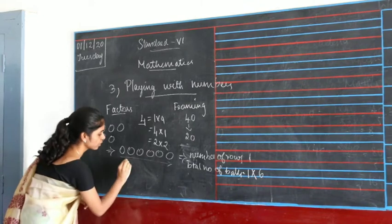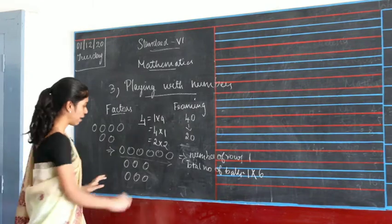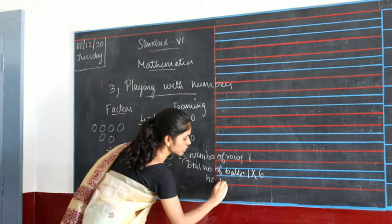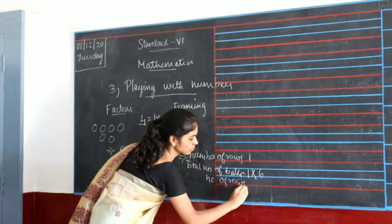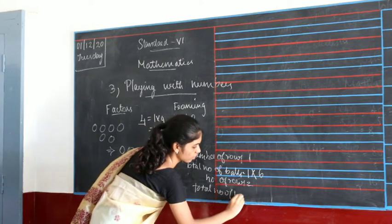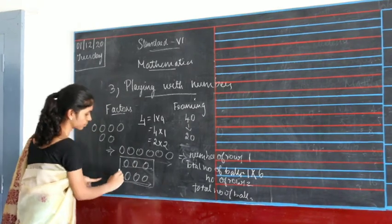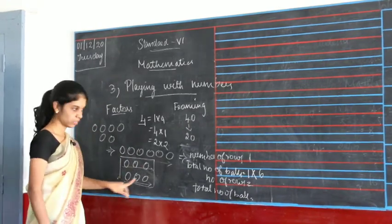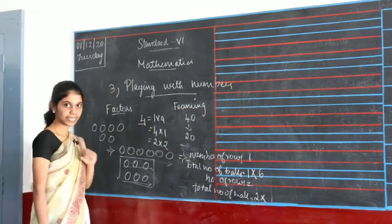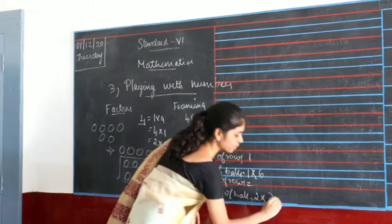Likewise, you can arrange them in 2 rows — row 1 and row 2. That means the number of rows is 2. Here you have 1 row and here you have 1 row. 2 into — how many balls in 1 row? 1, 2, and 3. So 2 into 3 will be 6.